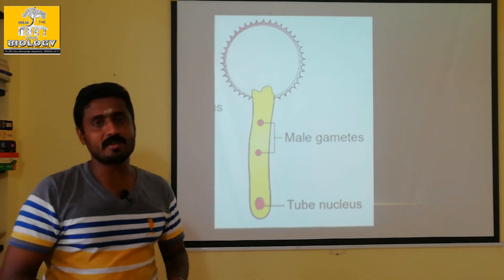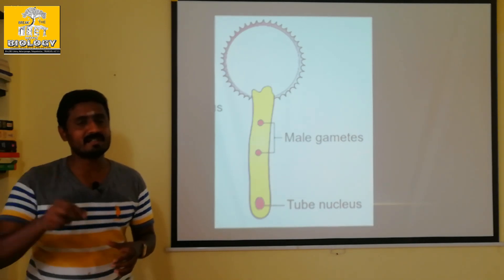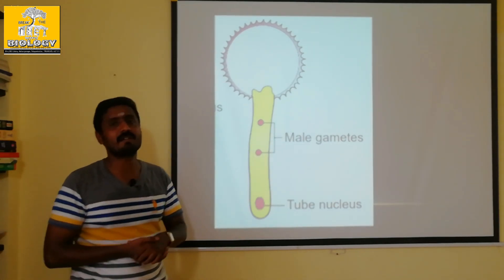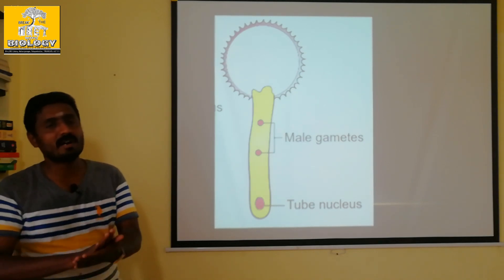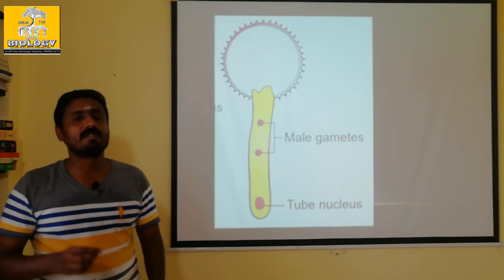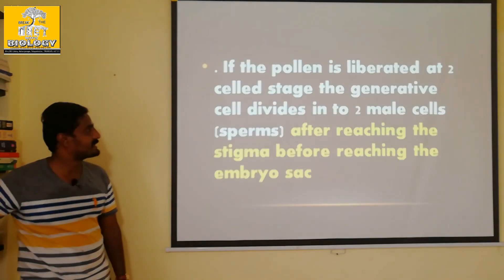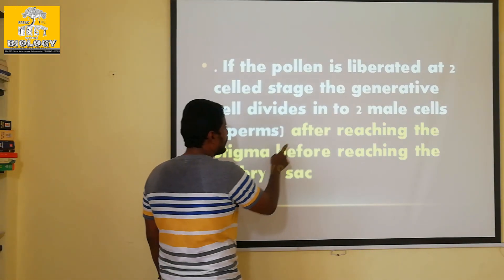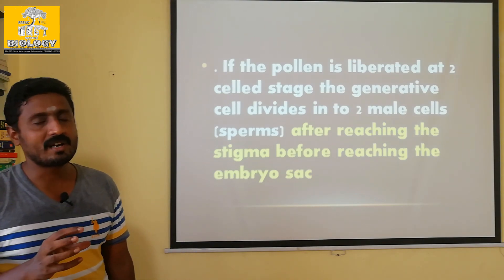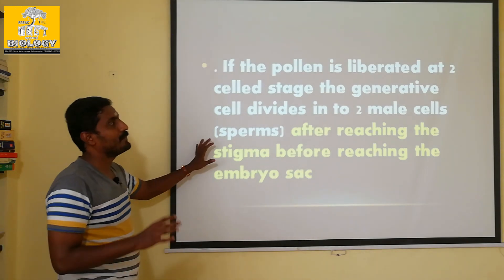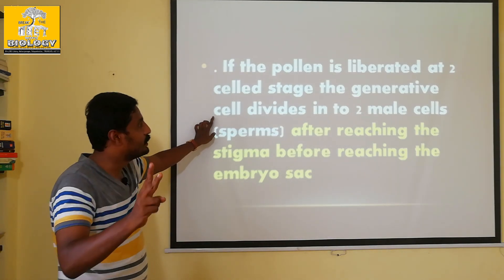The ovules and gametes move in the tube. That is fertilization — double fertilization. There is a link in the description where you can see what the pollen tube is doing. The pollen tube reaches the stigma, then the micropyle. Male gamete formation: 60% of the plant, 2-cell stage and 3-cell stage. After reaching the stigma, before reaching the embryo sac, if the pollen is elaborated in 2-cell stage, the generative cell divides into 2 male gametes.